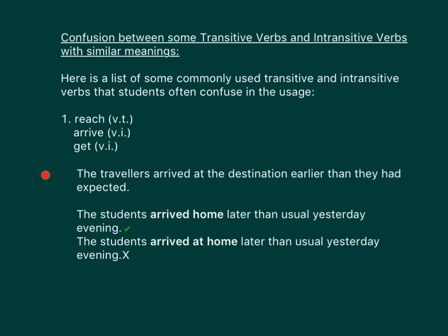Examples: 'The travelers arrived at the destination earlier than they had expected.' 'The students arrived home later than usual yesterday evening.' This one is wrong: 'The students arrived at home later than usual yesterday evening.' The 'at' should not be there.